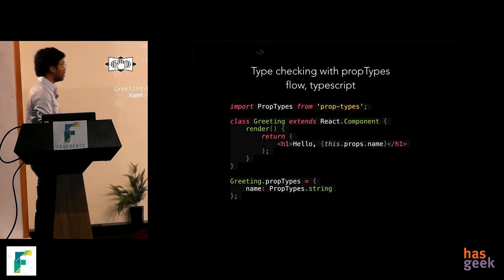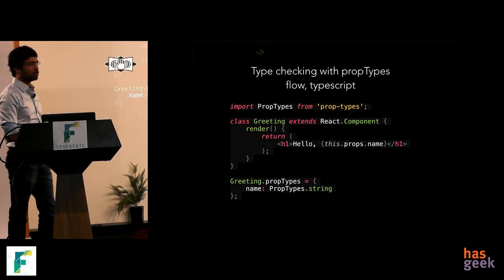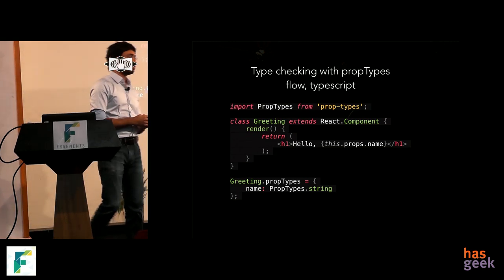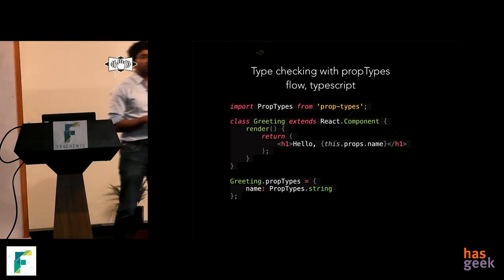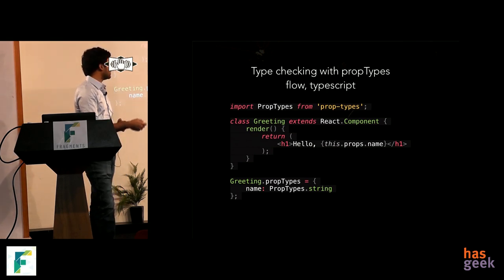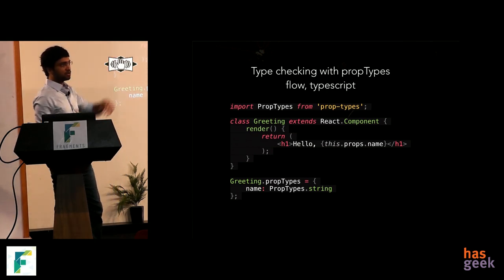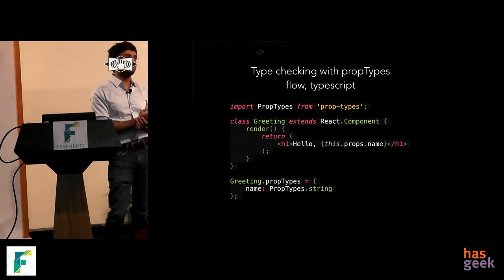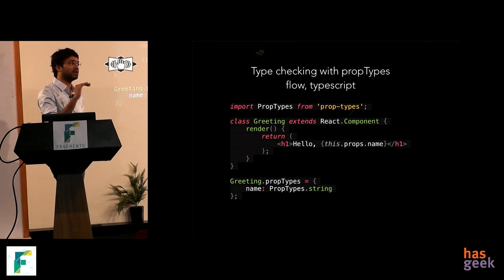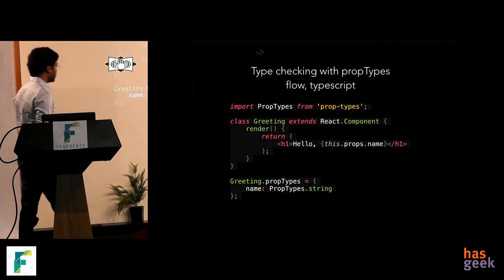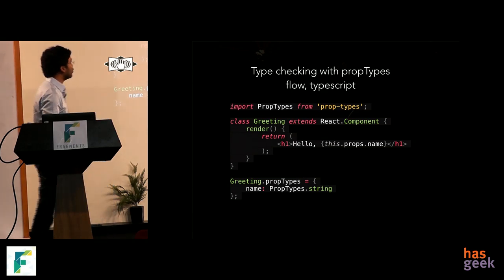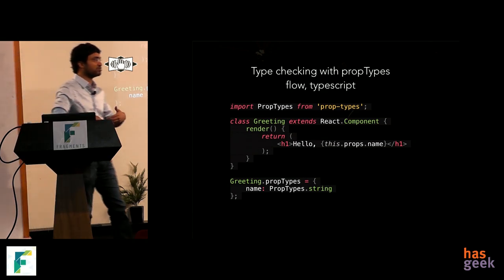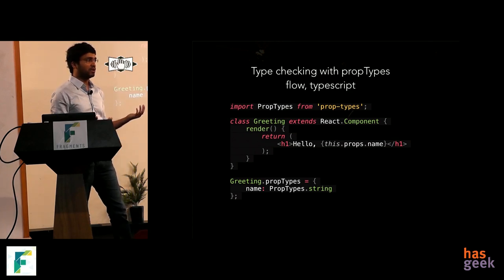When you have big applications and pass arguments to React components, React has from the beginning allowed type checking via PropTypes. You can define that a parameter like name must be a string. This is still a valid way to do it today, but the ecosystem has matured and you can also use other tools like TypeScript or Flow to do more comprehensive type checking.